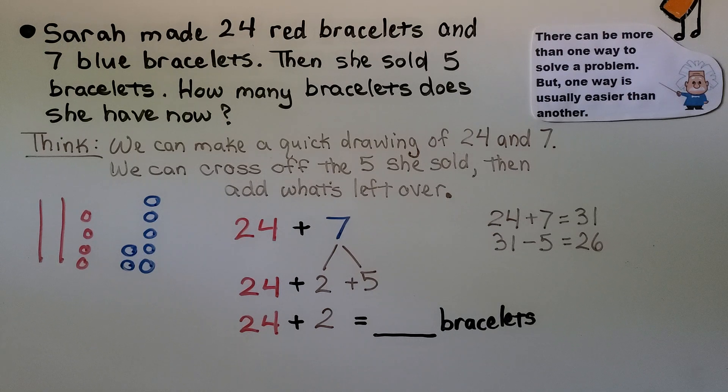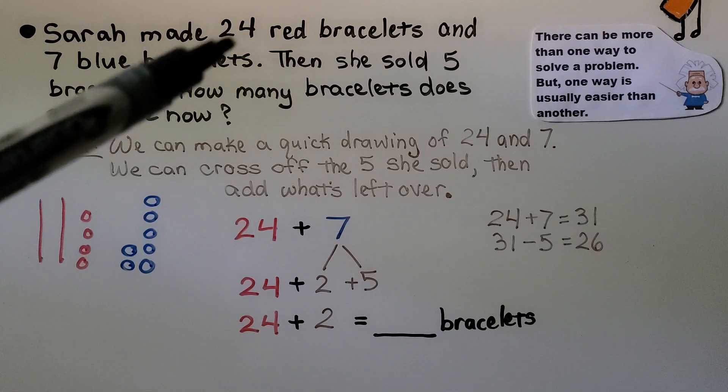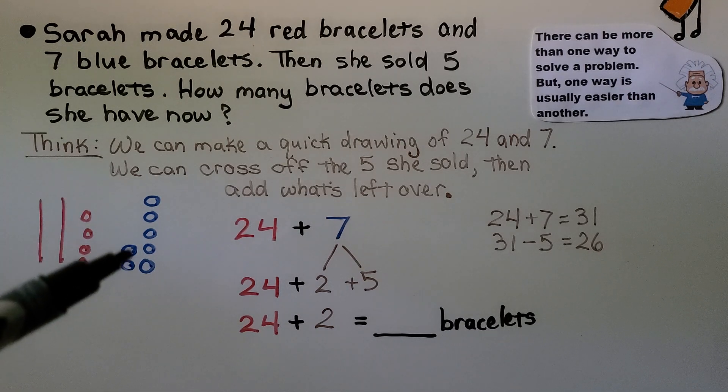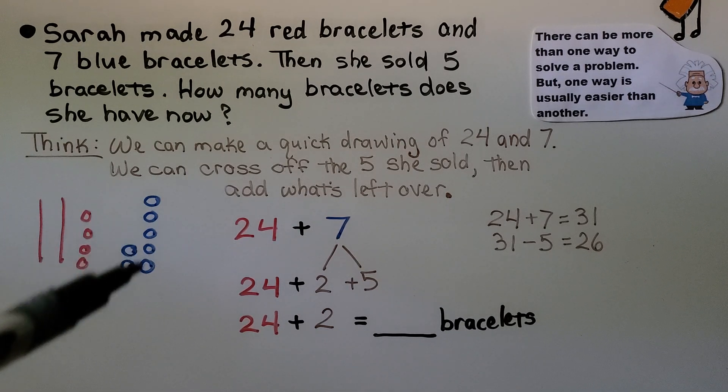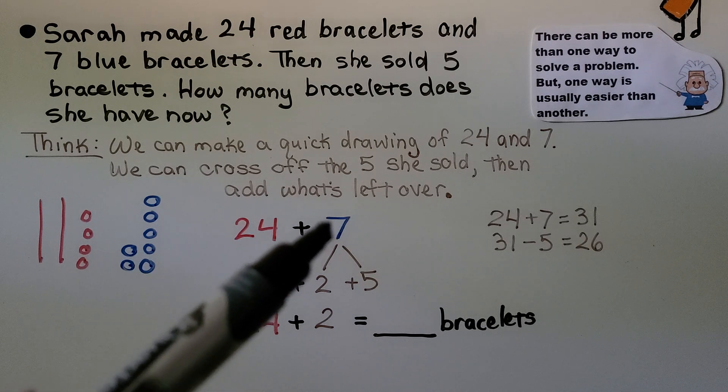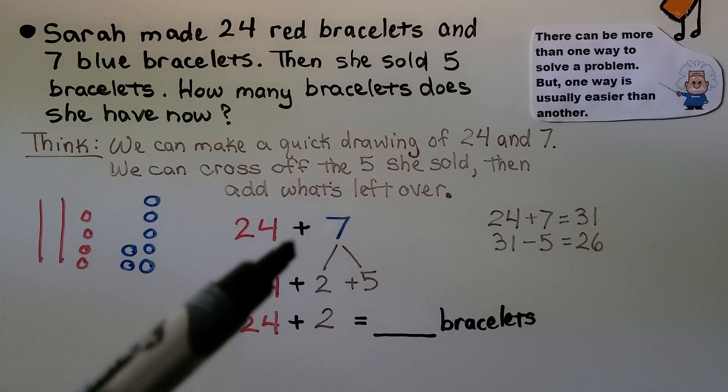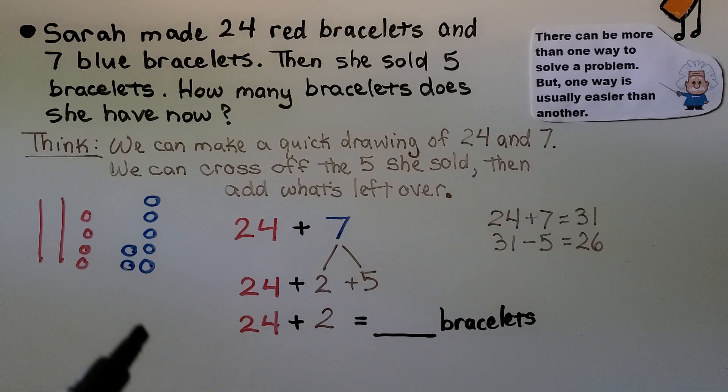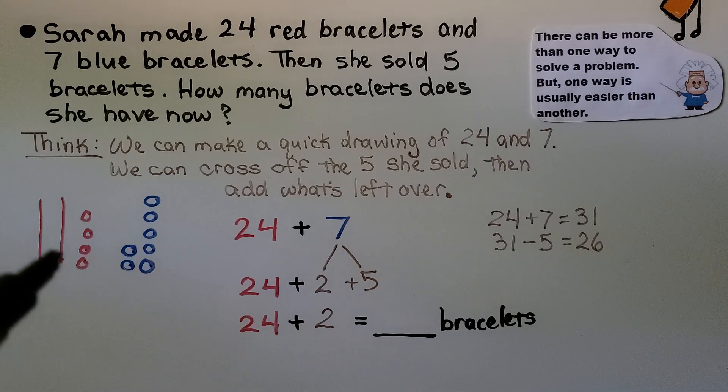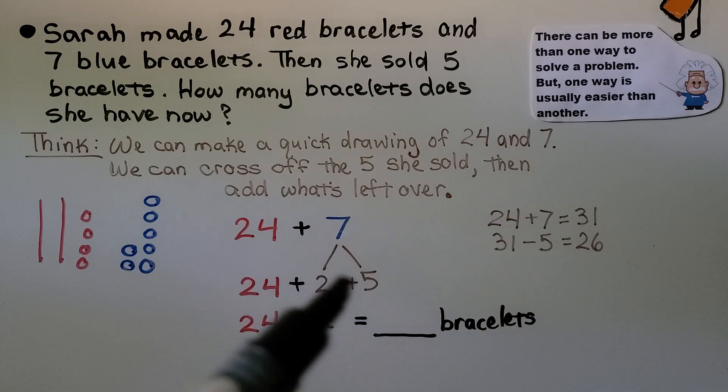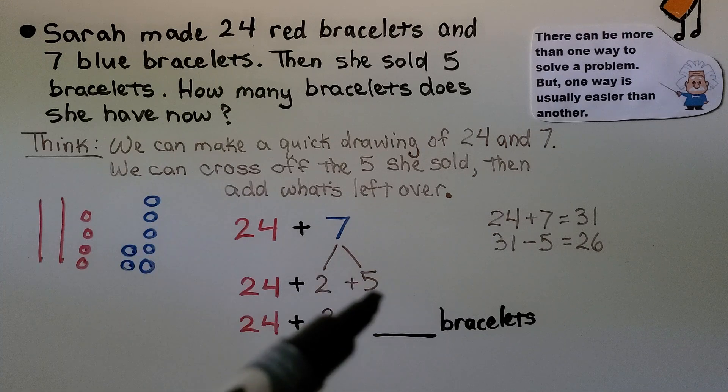We think we can make a quick drawing of 24. There were 24 reds. We make 2 tens, 4 ones and 7 blue. We make 7 little circles for the 7 blue bracelets. And we think we can cross off the 5 that we split a 7 into that she sold and then add what's left over. So instead of adding these right away, we can break the 7 into a 2 plus 5 so we can take away the 5 she sold.